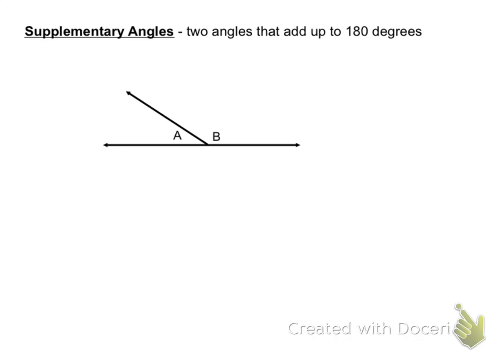Supplementary Angles are two angles that add up to 180 degrees. So A and B in this picture are both supplementary angles because they add up to 180 degrees. Keep in mind, Supplementary Angles have to be exactly two angles — it cannot be more than two angles.